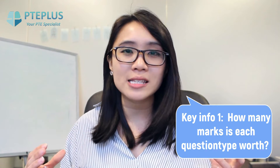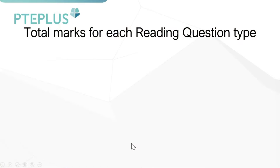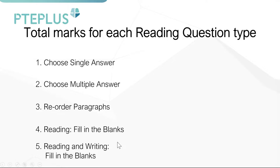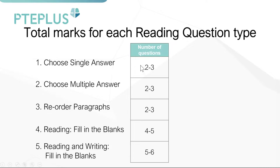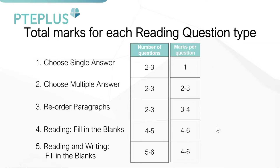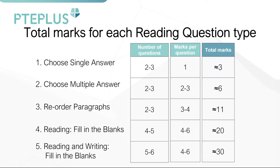The first important thing to understand is how many marks your reading question types are worth. There are five reading question types, and generally you'll get two to three questions each, but for fill in the blanks you could get a few more. Each fill in the blanks question is worth four to six marks — a lot more than a single answer worth one mark. From the total marks alone, fill in the blanks are worth the most, followed by reorder paragraphs.